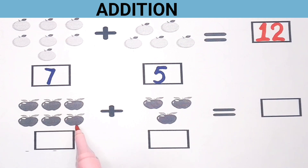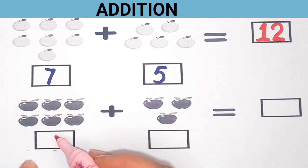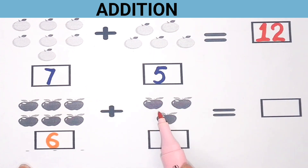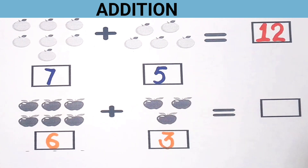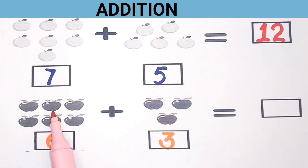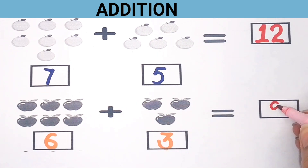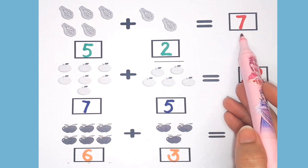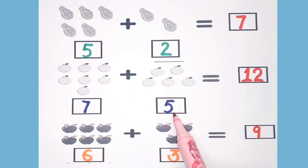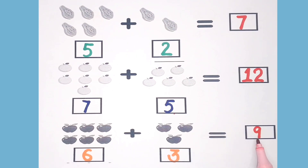Let's take another example — here are some apples: 1, 2, 3, 4, 5, 6 — six apples. And 1, 2, 3 — three apples. Now we will find the total number of apples, so count: 1, 2, 3, 4, 5, 6, 7, 8, 9. Total number of apples is 9. So: 5 plus 2 is equal to 7; 7 plus 5 is equal to 12; 6 plus 3 is equal to 9.